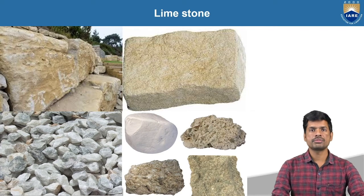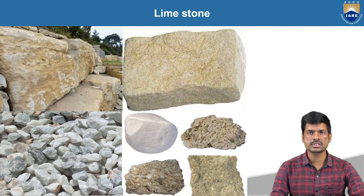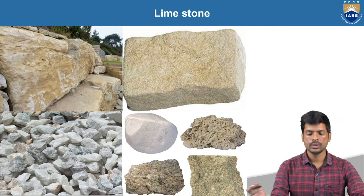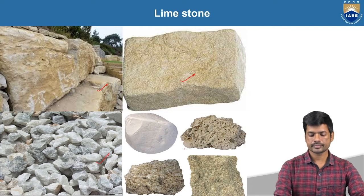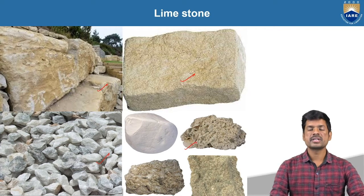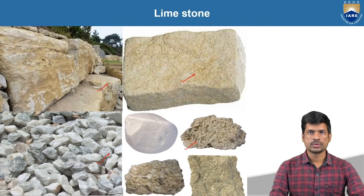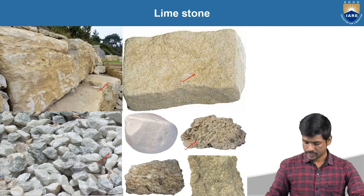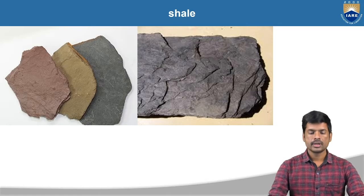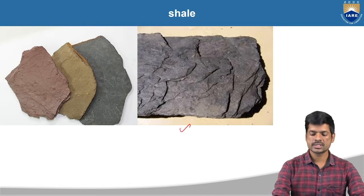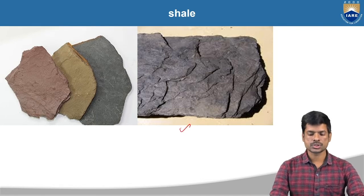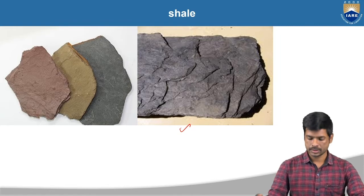Here you can see the picture of limestone which is available naturally — these are the different types of stones, that is limestone. And next, this is the argillaceous material example, shale. This is the normal stone which we are going to find in earth.